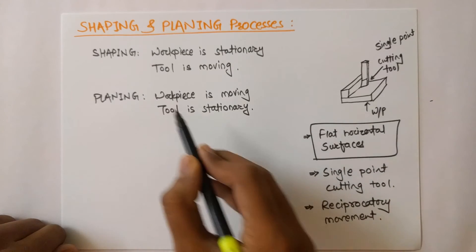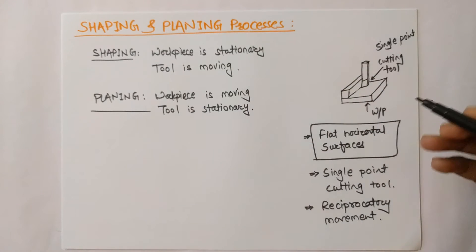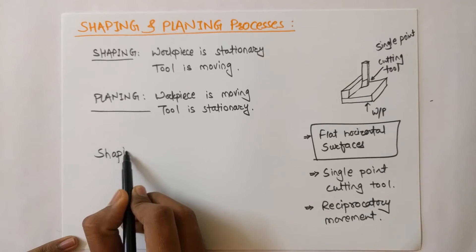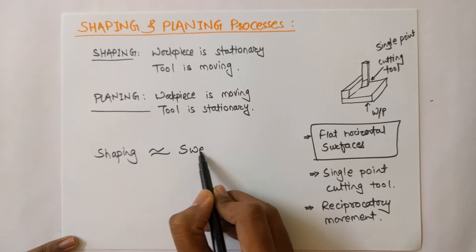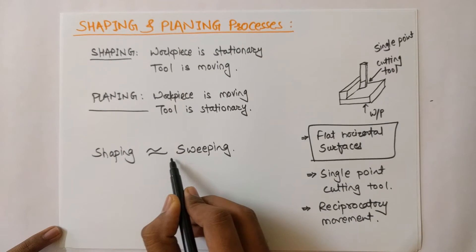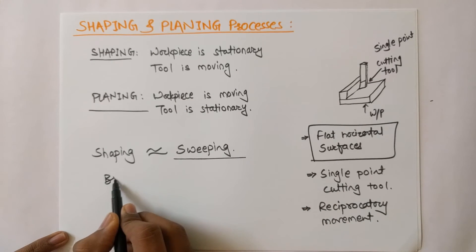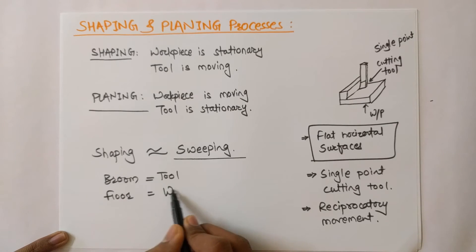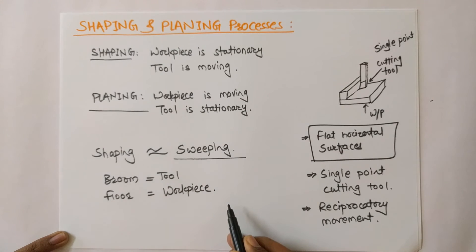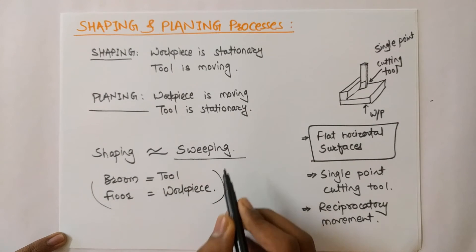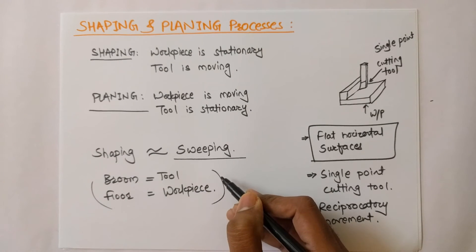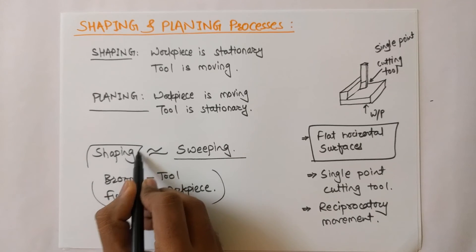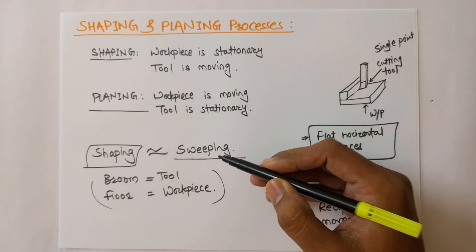To remember the difference between shaping and planing — in which process the tool moves or the workpiece moves — just consider the word 'shaping.' It sounds similar to 'sweeping,' so here's a trick: in sweeping the floor, we use a broom. Consider the broom as our tool and the floor as the workpiece. When we sweep the floor, the broom is in our hand so it is moving, and the floor is stationary. That's exactly how shaping works.